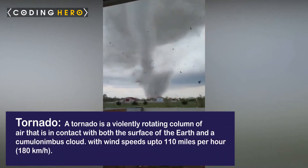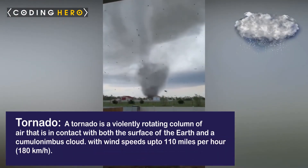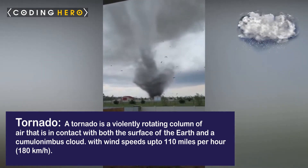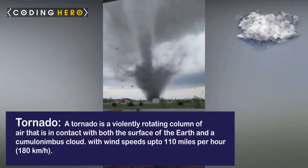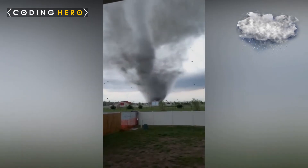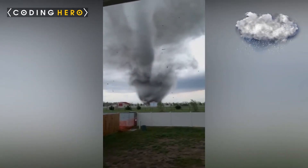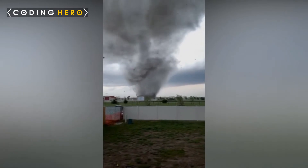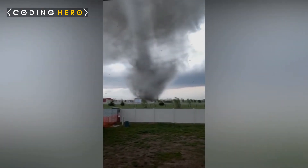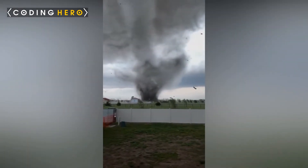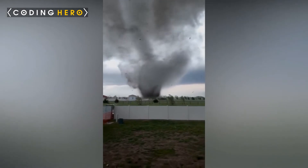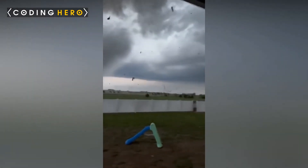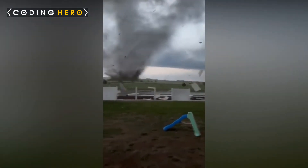Tornado. A tornado is a violently rotating column of air that is in contact with both the surface of the earth and a cumulonimbus cloud. It is characterized by a low pressure area in the center, around which — from an observer looking down toward the surface of the earth — winds blow counterclockwise in the northern hemisphere and clockwise in the southern hemisphere. Most tornadoes have wind speeds less than 110 miles per hour.